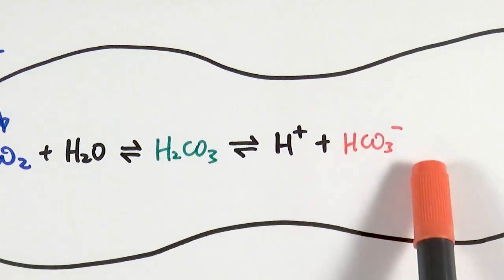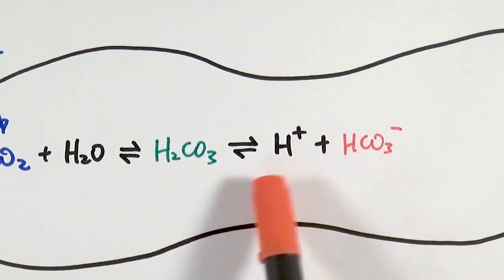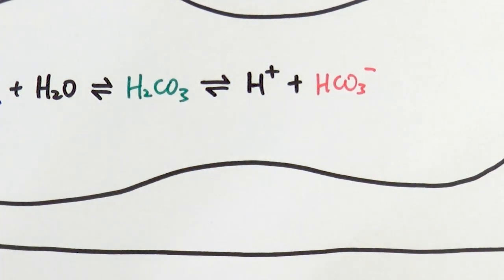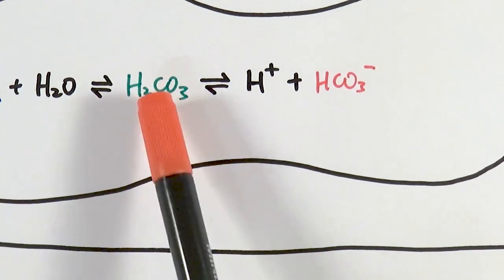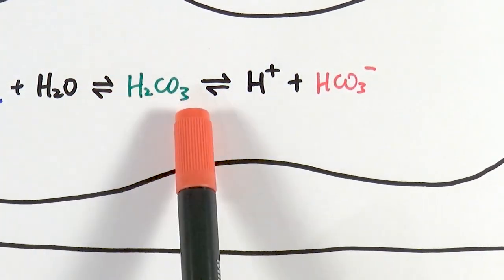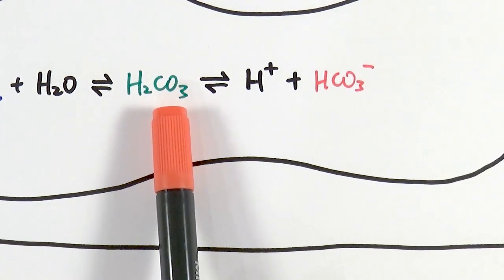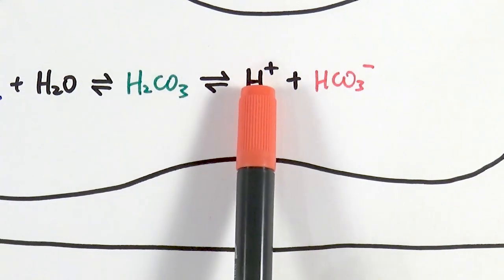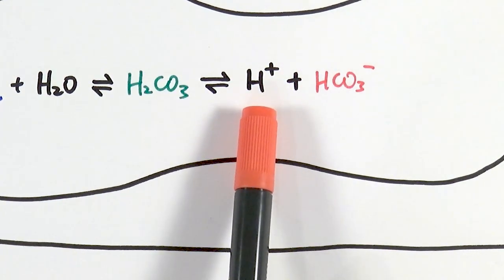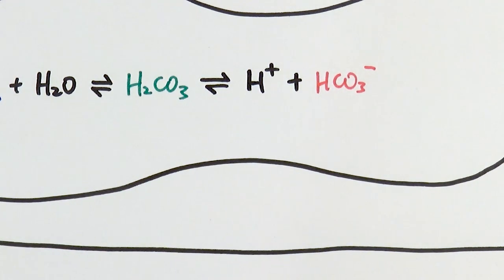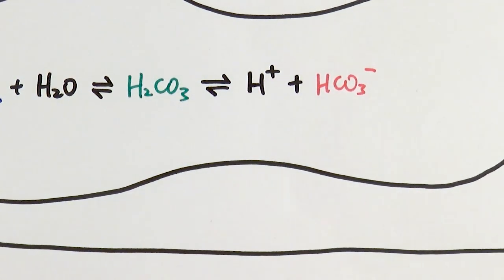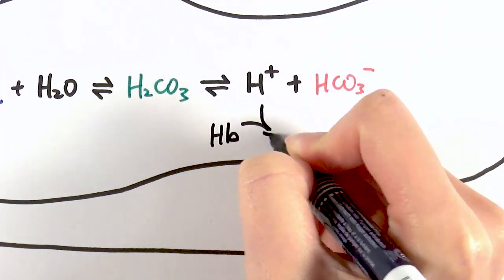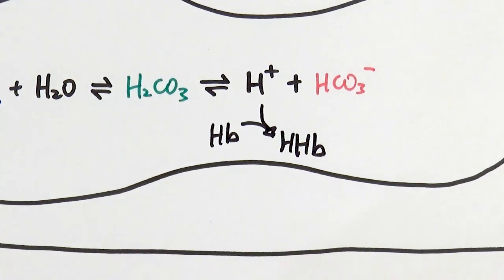The hydrogen ion is what actually makes the whole thing acidic. If the carbonic acid H₂CO₃ stays intact it doesn't demonstrate acidic properties — it's only when it dissociates and forms hydrogen ions that it becomes acidic. So we need a way of buffering those hydrogen ions, and in this case they combine with hemoglobin to form hemoglobinic acid, simplified as HHb. Because the hydrogen ion is now bound to the hemoglobin, it no longer exhibits acidic properties.